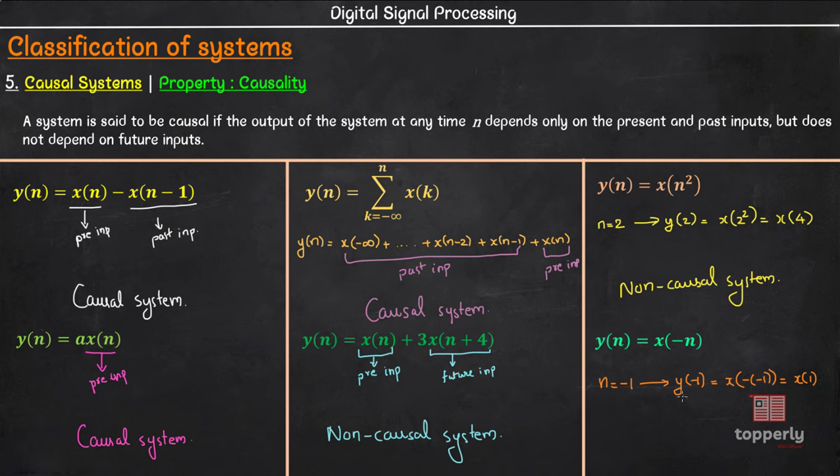Thus, the output at n equal to minus 1 depends on the input at n equal to plus 1, which is 2 units into the future. So this is also a non-causal system.